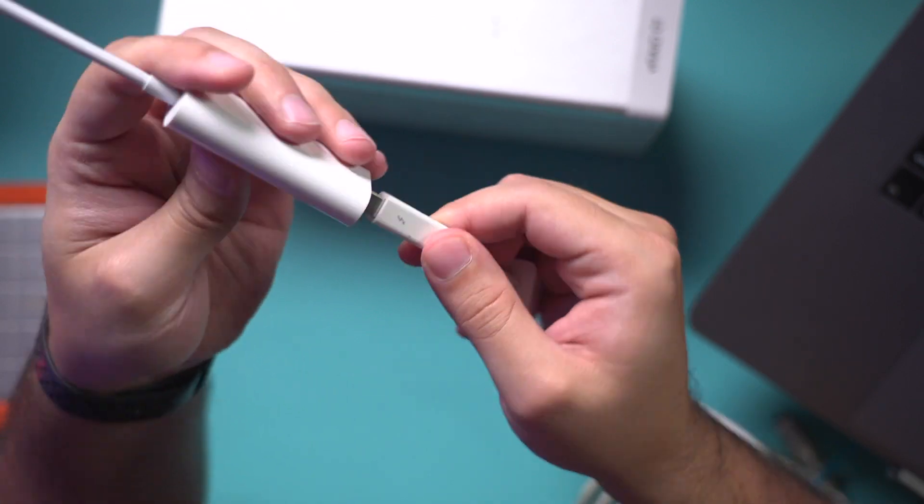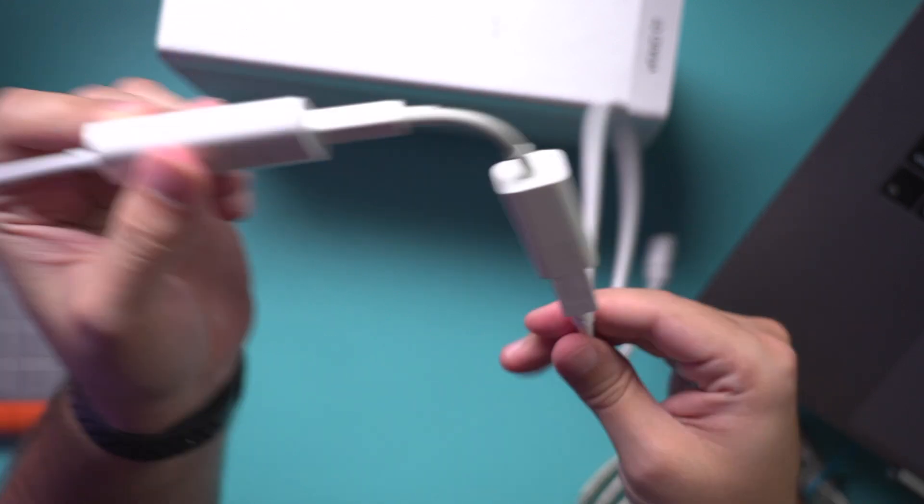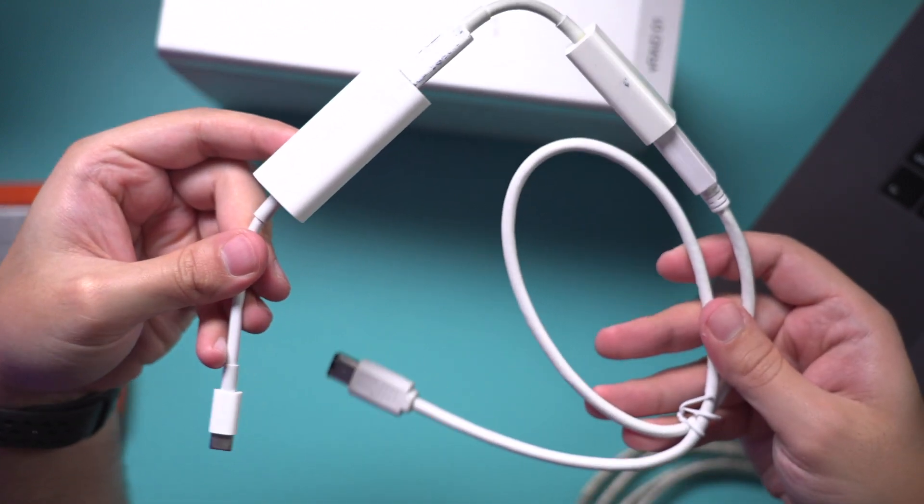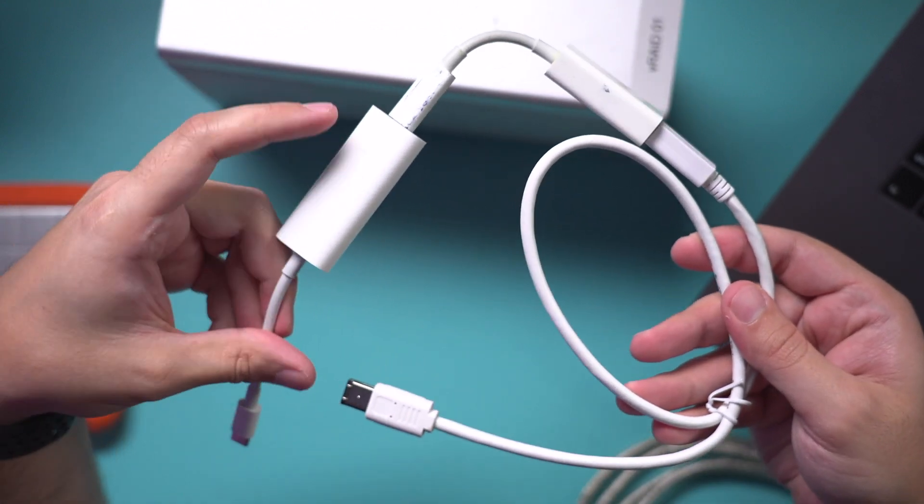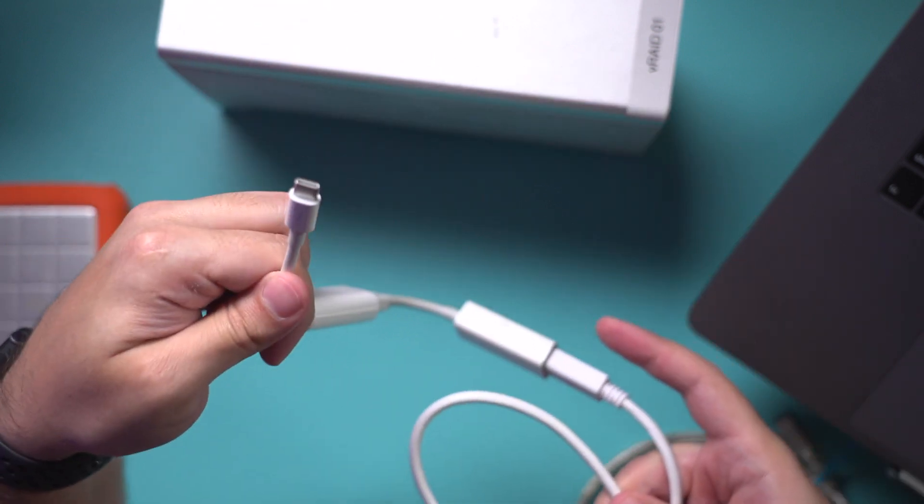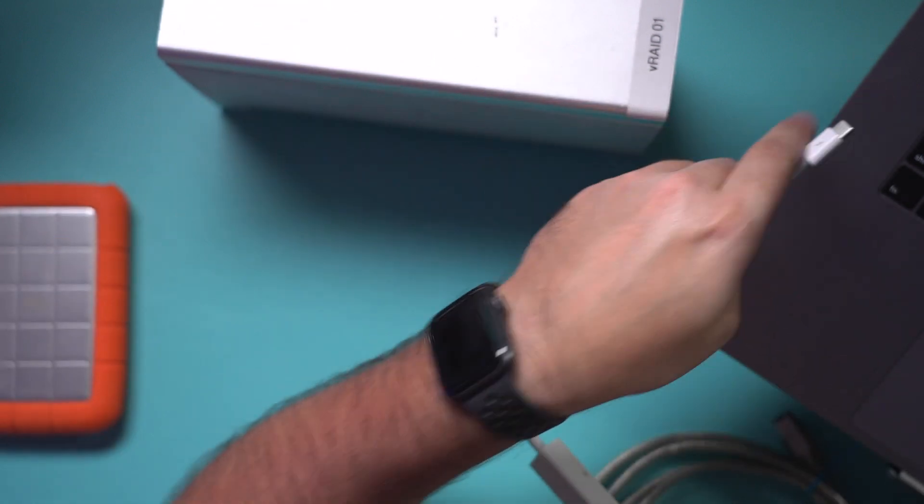Connect these two together. This is basically what it ends up looking like—your big dongle. You got your FireWire cable depending on where you started, one dongle, two dongles, and then this will go into your computer here.